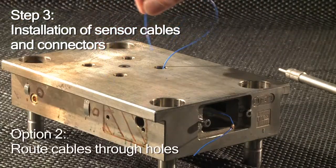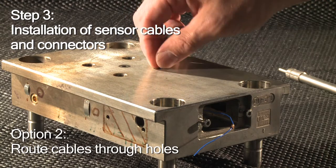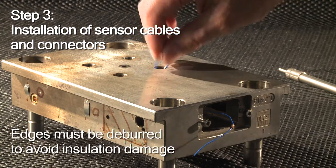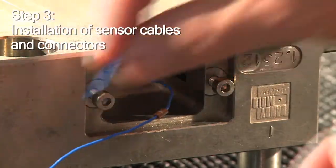In some tools there are holes for cable routing. In any case, make sure that corners and hole edges are deburred to avoid damage to the cable's insulation coating.